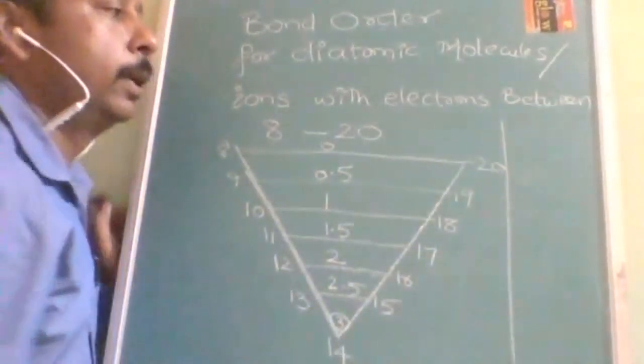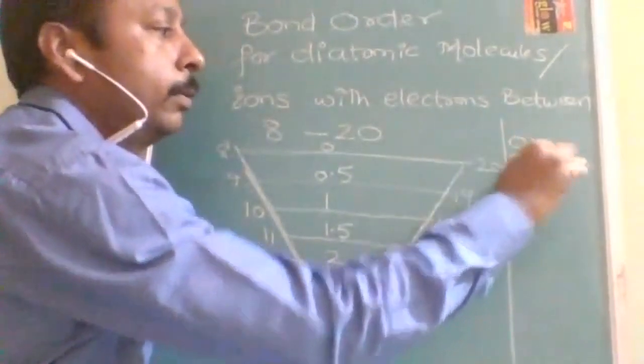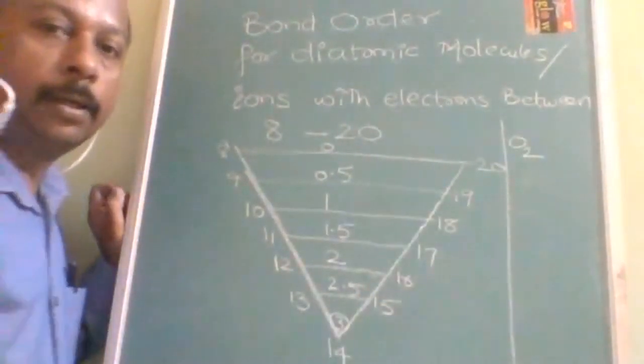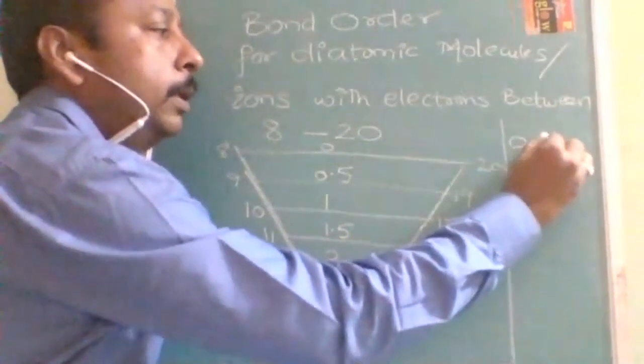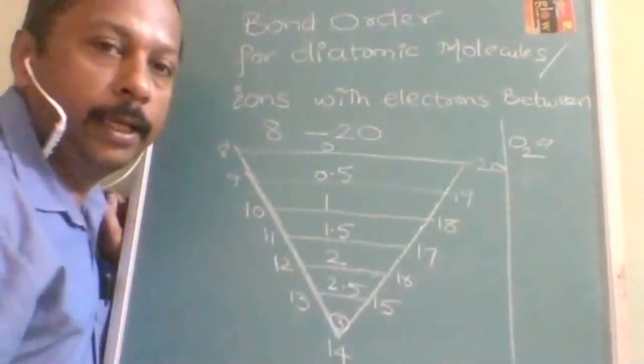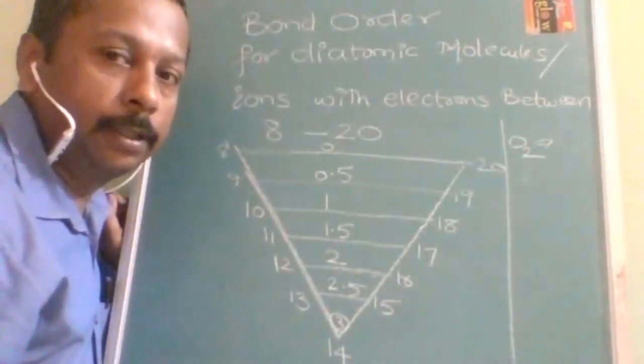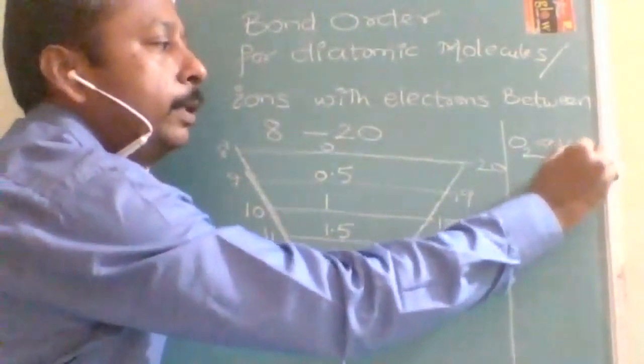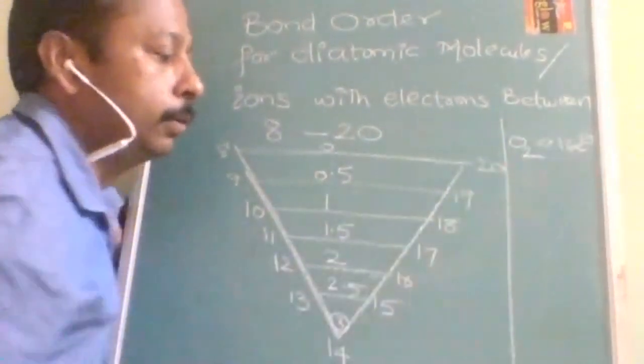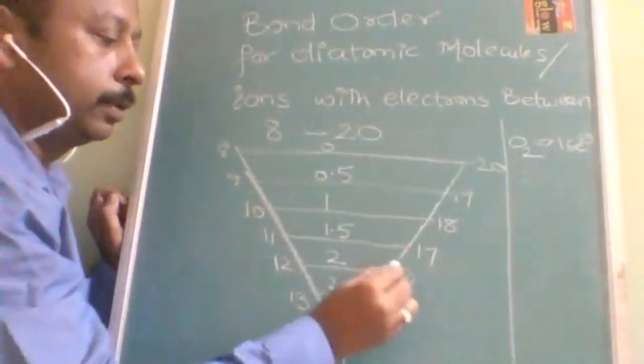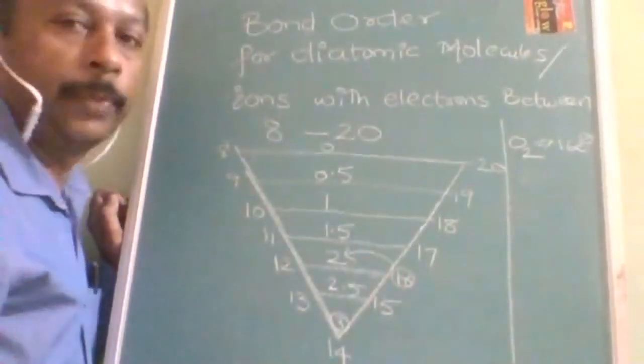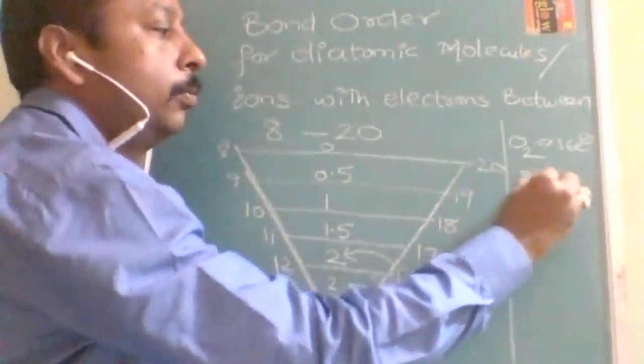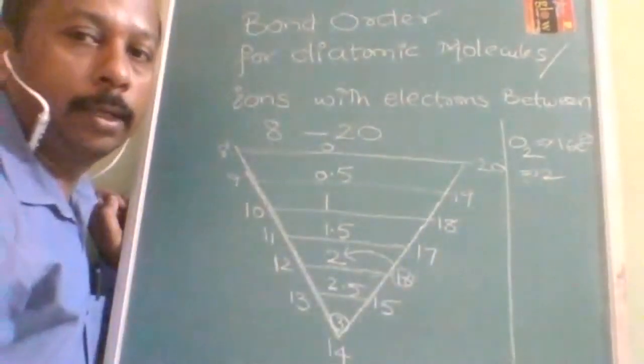OK, so let us take, let us start with the oxygen. OK, let us start with the oxygen. So oxygen, all of you know that 8 electrons will be there in each oxygen. So there can be maximum of 2 into 8, that is 16 electrons. OK, so 16 electrons, just see here 2. That means bond order of O2 is 2. That's all.